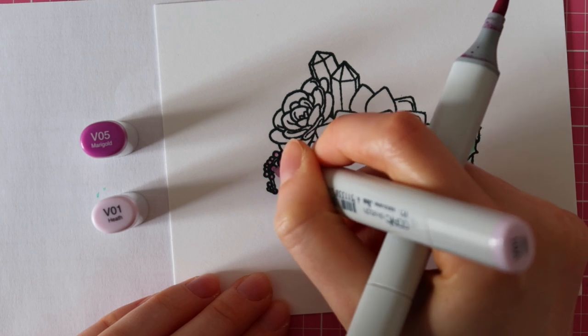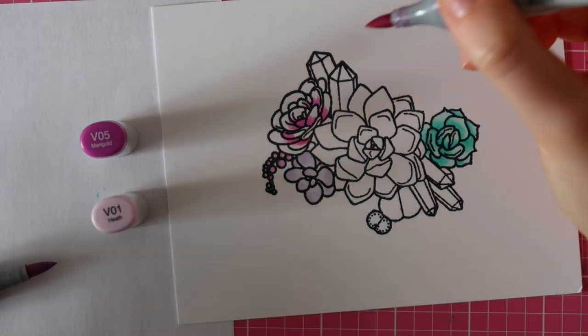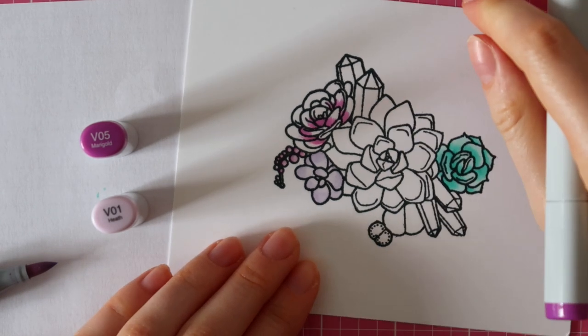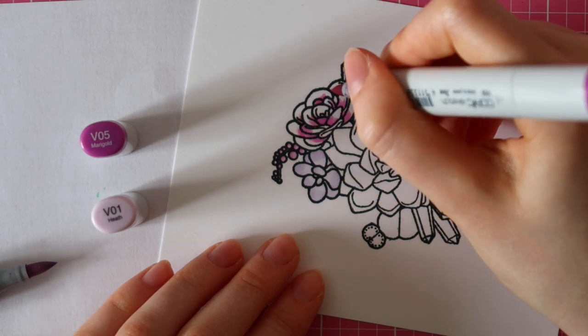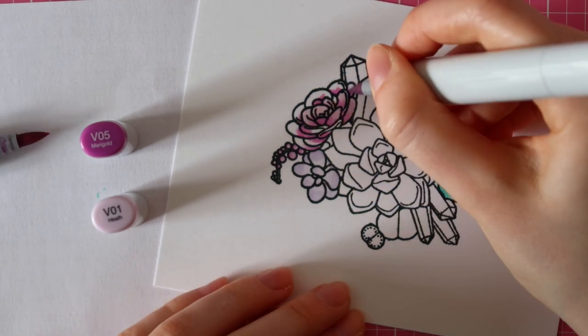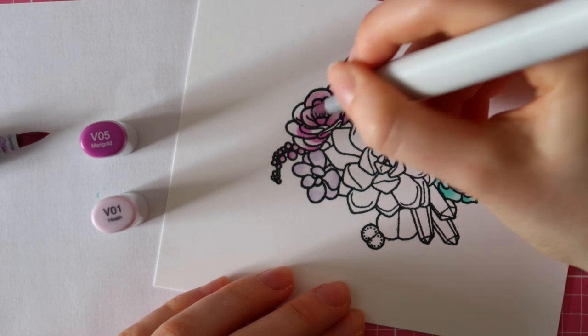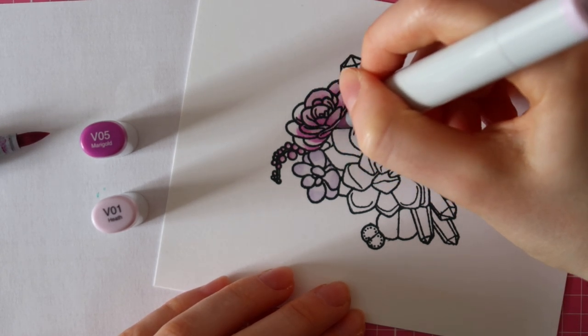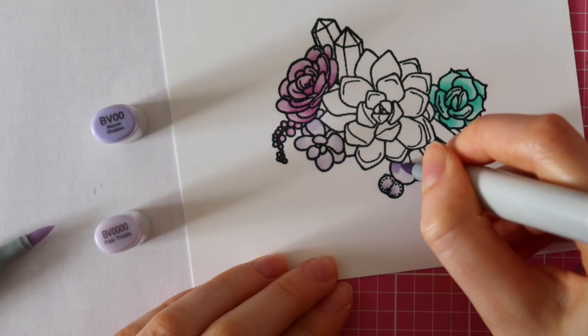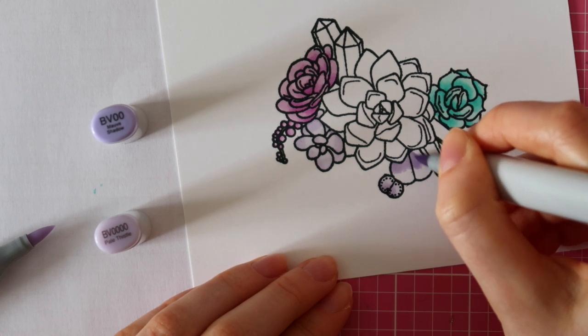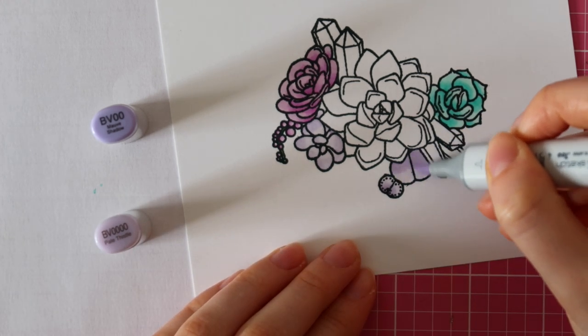Next, I'm using another shade of purple. This time I'm using a violet color, so I'm using V05 and V01. I really love purple, but I honestly don't use it a lot in my cards. I think it's quite a tricky color to use on cards. But the succulent stamp sets really make it easy because there are a bunch of purple succulents out there.